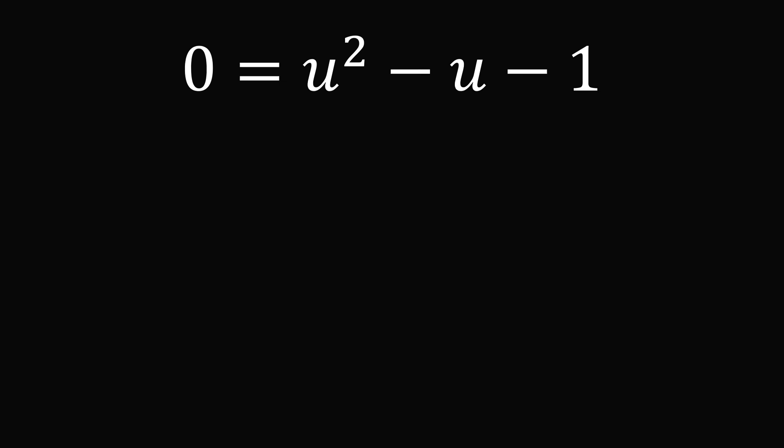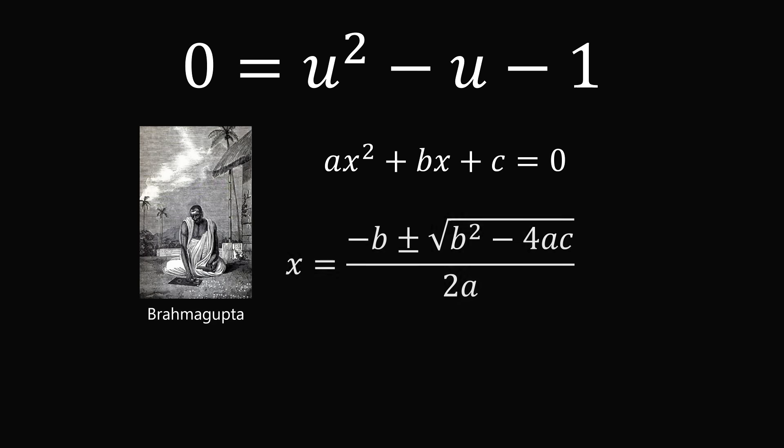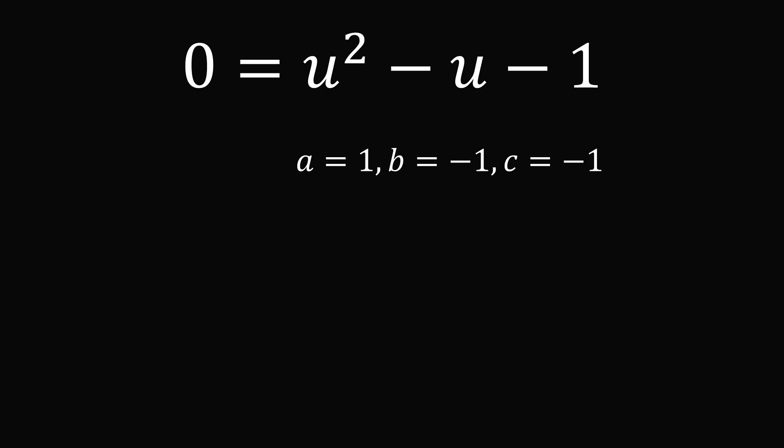There is a formula to solve any general quadratic: ax^2 + bx + c = 0. It was first known by Brahmagupta. We all memorized the formula: x = (-b ± √(b^2 - 4ac)) / 2a. In this particular equation, a = 1, b = -1, and c = -1. Applying the quadratic formula, we get u = (1 ± √(1 + 4)) / 2. This simplifies to u = (1 ± √5) / 2.